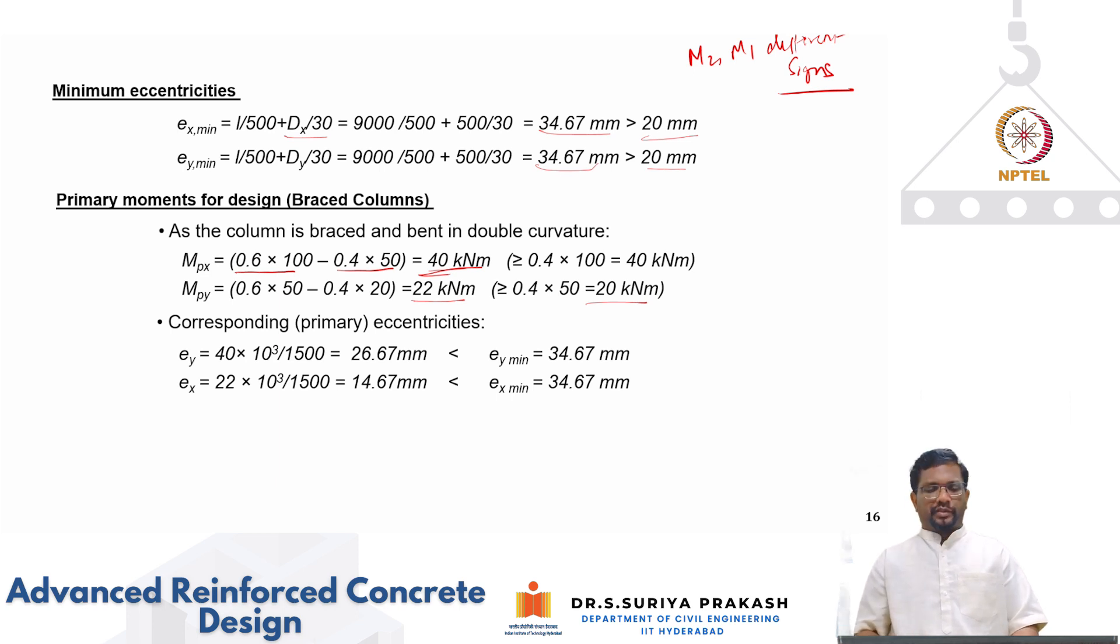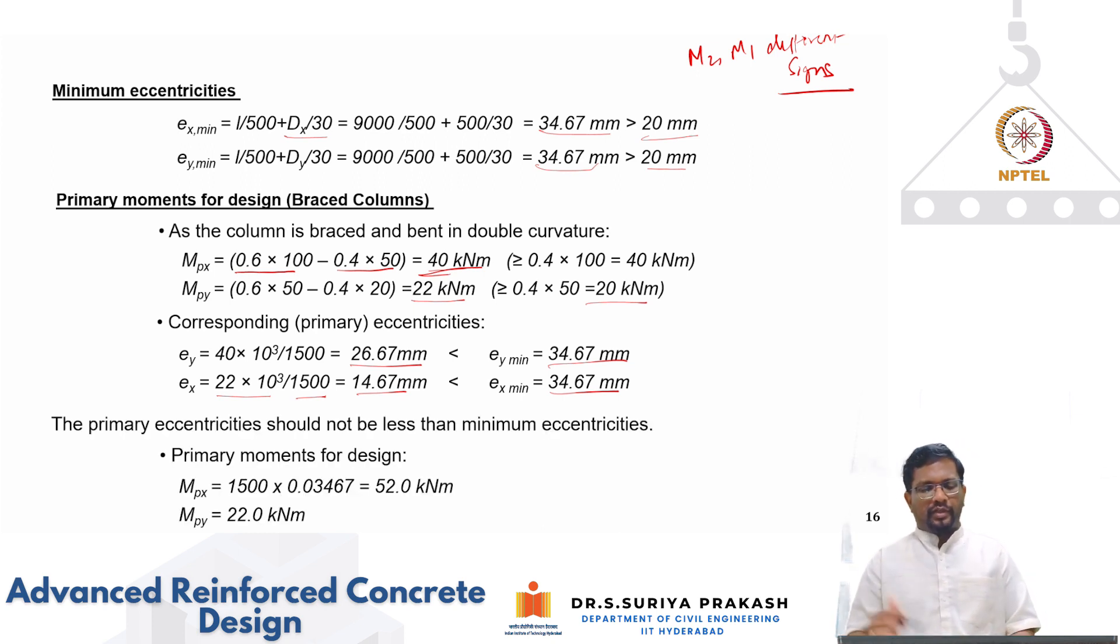Now let us calculate the primary eccentricities. Primary eccentricities are nothing but primary moment divided by the load. So e_y will be Mp_x by Pu which is this, similarly e_x will be Mp_y divided by Pu. So both of them are less than the minimum eccentricities that we need to consider. So that is the reason the code, we are going to take bending moment corresponding to this eccentricity. So I multiply by that and then you get 52 instead of 40.